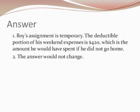The key word in that example is 'temporary,' and Roy's assignment is temporary. So the deductible portion of his weekend expenses is $420, which is the amount he would have spent if he did not go home. As for question two, the answer wouldn't change — the deduction is simply limited to the amount that was actually spent.